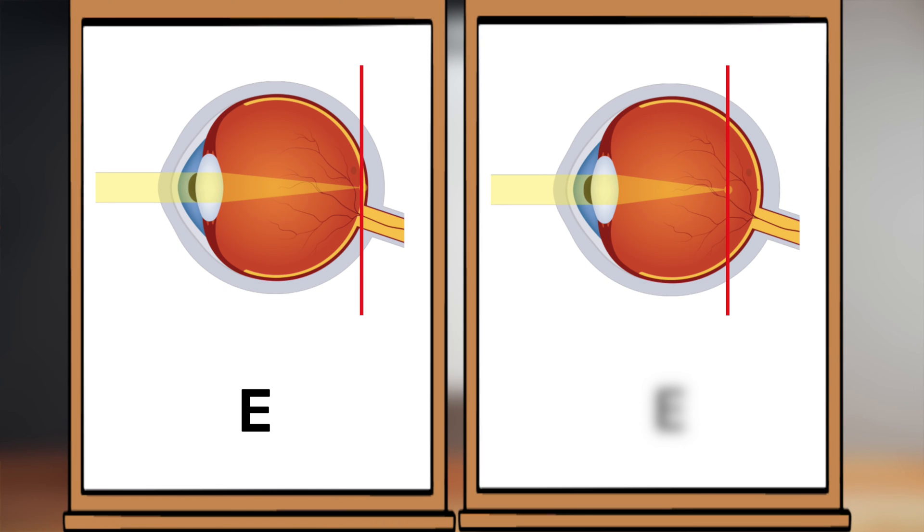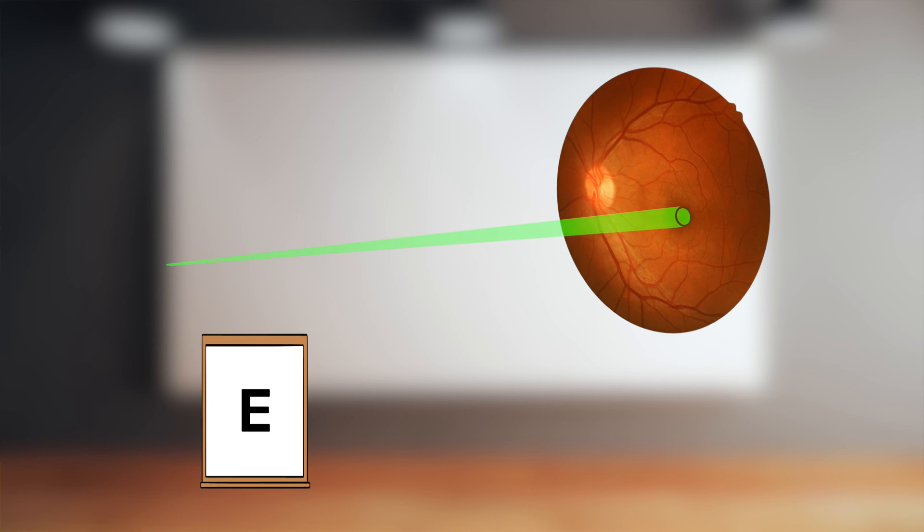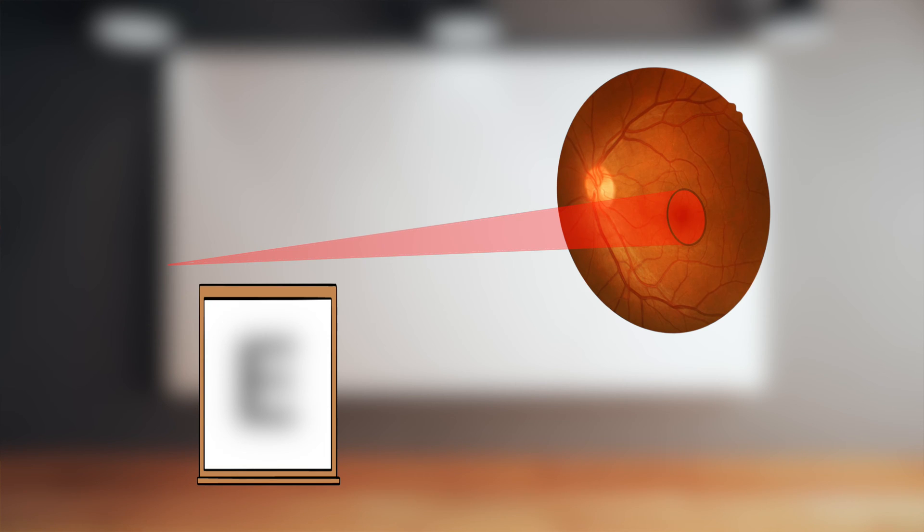If the light is not focused properly on the retina, the photoreceptors are not able to register a proper image, and therefore increasing the size is necessary, and therefore also increasing the visual angle.